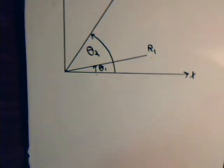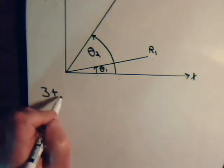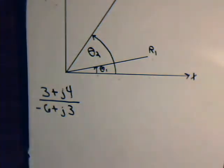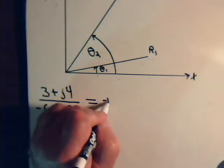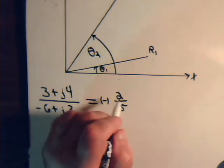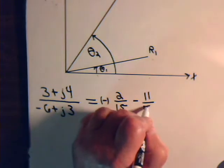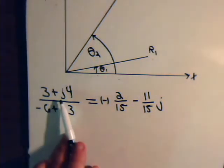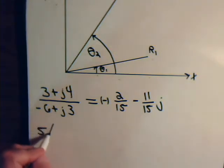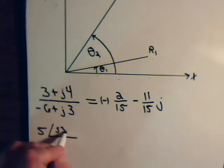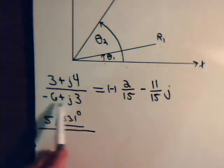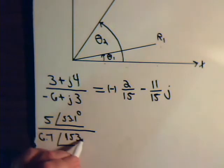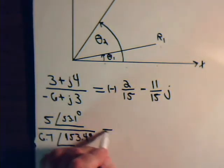What we'll do for the rest of this video is consider another problem that we did in the previous video, where we had 3 plus j4 and we divided it by minus 6 plus j3. After some manipulation, we found out this is equal to minus 2 divided by 15 minus 11 over 15 times j. Let's see how we would do this if they were expressed in their polar form. 3 plus j4, that is 5 angle 53.1 degrees. This, that is 6.7 angle 153.4 degrees.